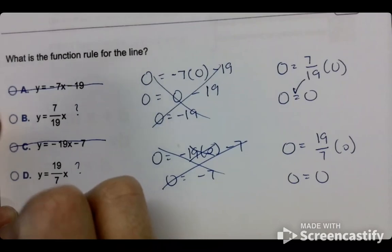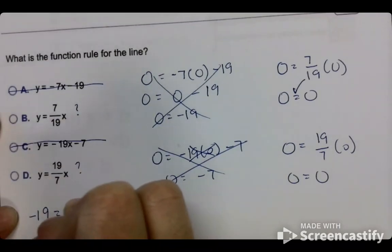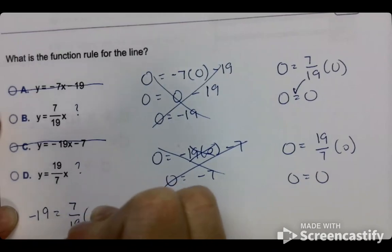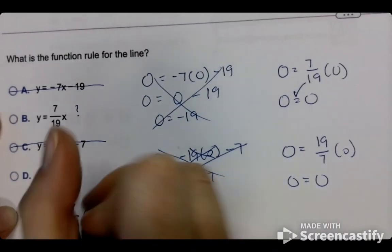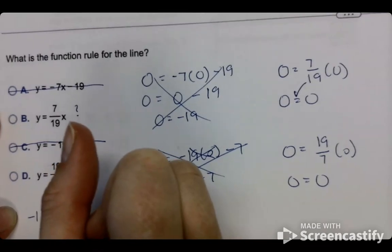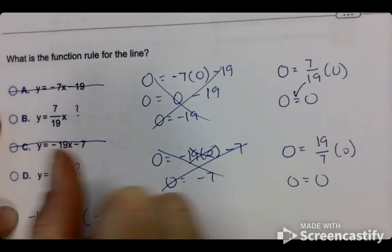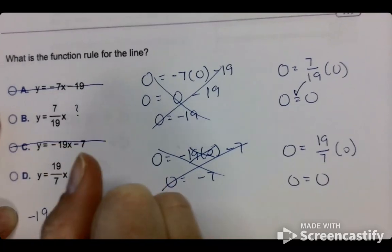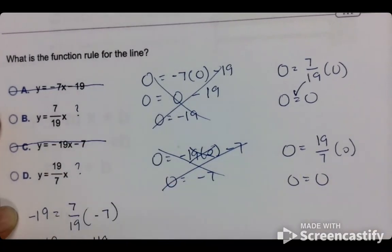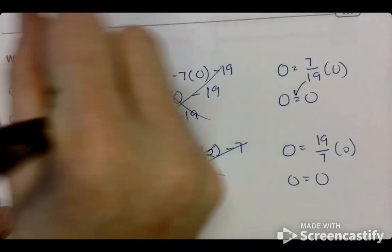So I'm going to plug in in B. I have negative 19 equals 7 over 19 times negative 7, which means if I put that into Desmos, right? I can put that into Desmos, and it'll give me an answer, and it'll give me negative 49 over 19. Those two don't equal each other, so that doesn't work.